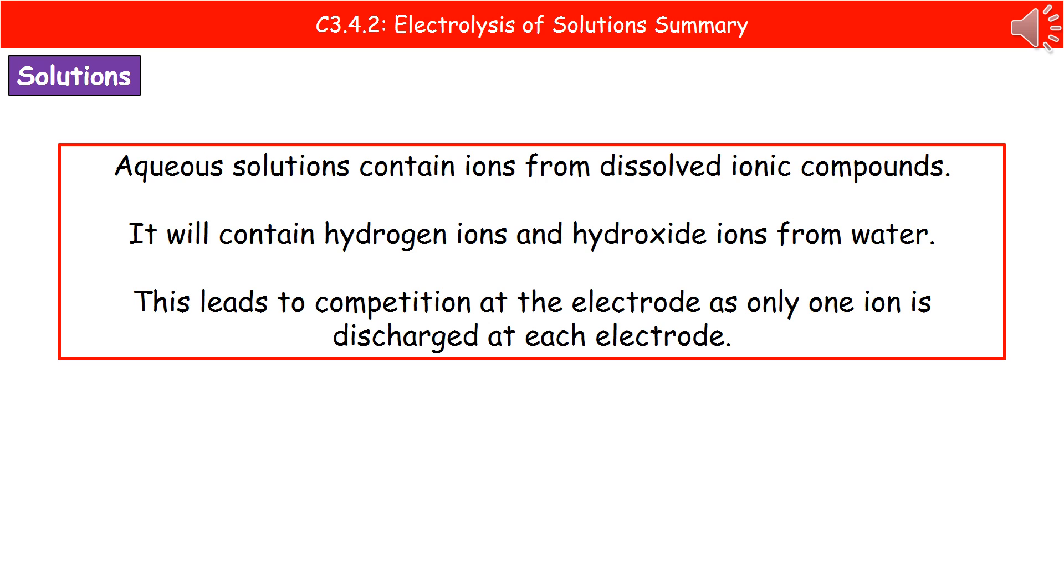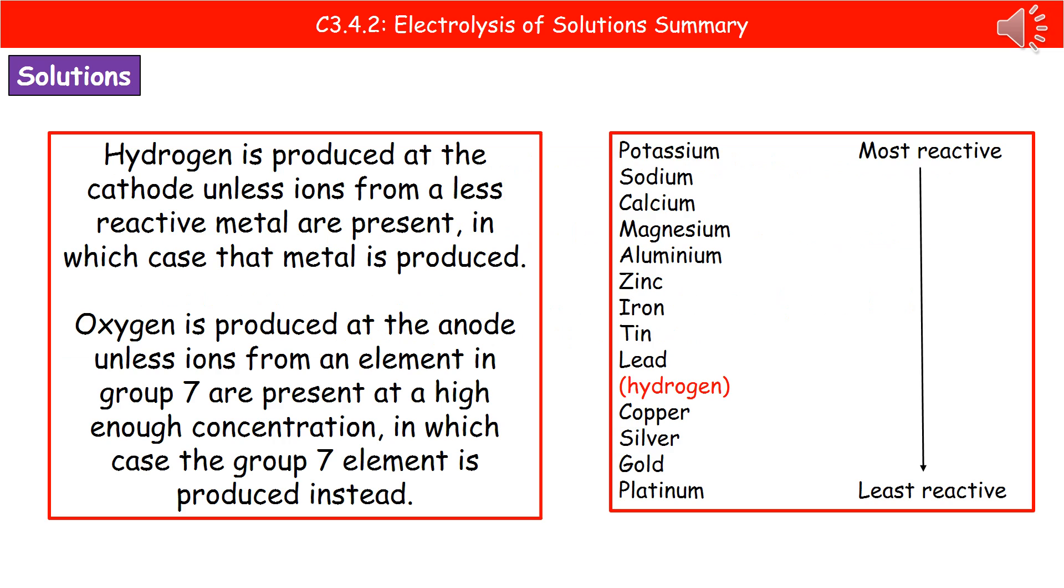Moving on to solutions. In an aqueous solution, we have the ions from our dissolved ionic compound, plus the hydrogen and hydroxide ions from the water it's dissolved in. This results in competition at each electrode, and only one ion will be discharged at each electrode. To work out what's made at the anode and cathode, we need to remember two important rules.